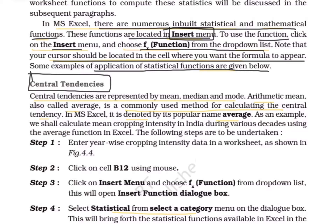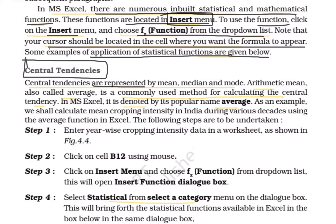If we recall Chapter 2 on data processing — statistical tables, rows, columns, measurements of central tendencies including mean, median, and mode — we discussed all of these in detail in class. But if we talk about calculating central tendencies using computer, we can do it in a much better way. Central tendencies are represented by mean, median, and mode.